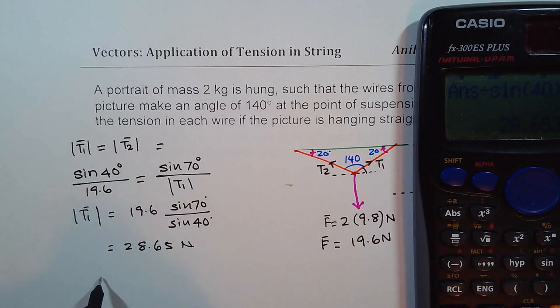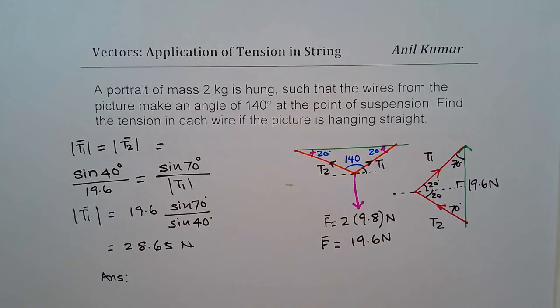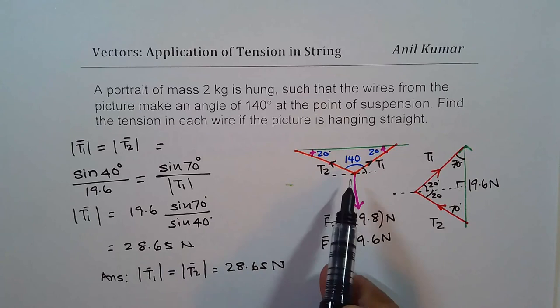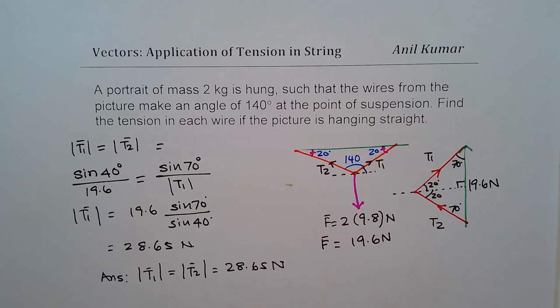So the answer is that tension in each string will have a magnitude of 28.65 newtons. Direction is already shown here in the diagram. So I hope the steps are absolutely clear. Feel free to write your comments and share your views. Thanks for watching, and all the best.